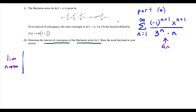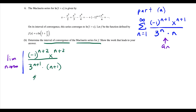We're taking the limit as n goes to infinity of the absolute value of our a sub n plus 1 term. To find the a sub n plus 1 term, you just replace every n with n plus 1. So here we'd have n plus 1 plus 1, which makes n plus 2, and x to the n plus 1 plus 1, which is also n plus 2. In the denominator we have 3 to the n plus 1 times n plus 1. Then we divide by a sub n, which is the same as multiplying by the reciprocal: times 3 to the n times n over negative 1 to the n plus 1 times x to the n plus 1.